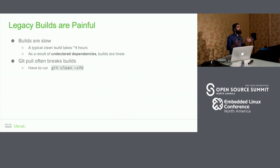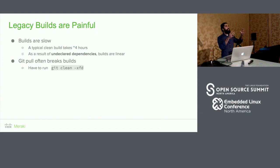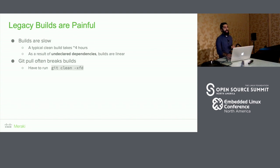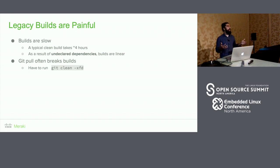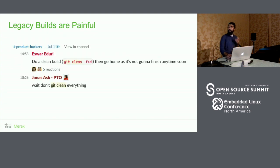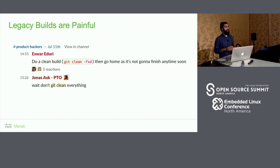Secondly, our legacy build system is very painful to use. Builds are super slow — like four hours for a clean build — because of undeclared dependencies, which means we have to build linearly. If you don't know whether package A can be built before package B, you can't parallelize them for fear of race conditions. When we do a git pull, it often breaks our builds because leftover artifacts in source directories cause packages to not get rebuilt.